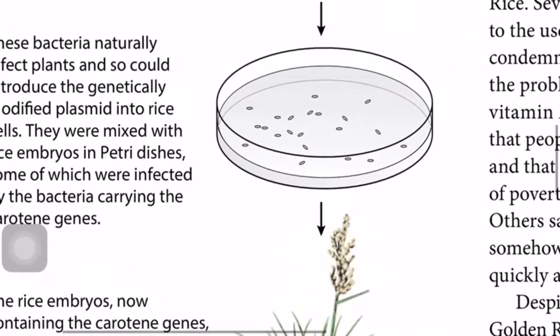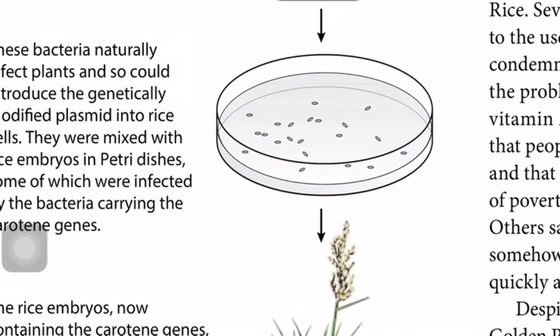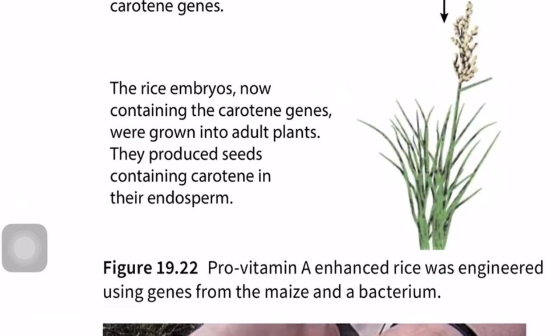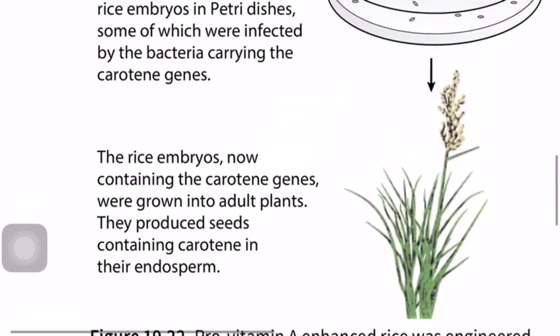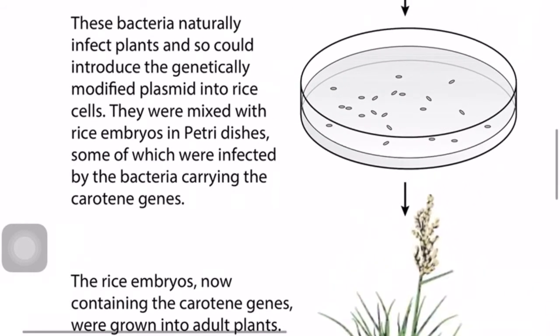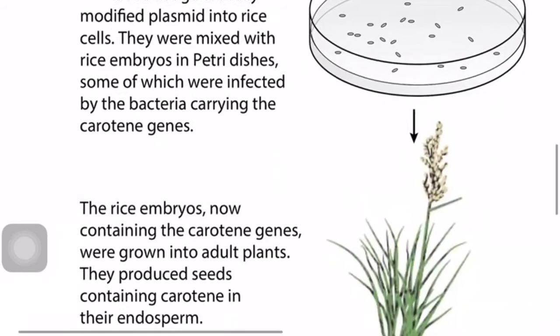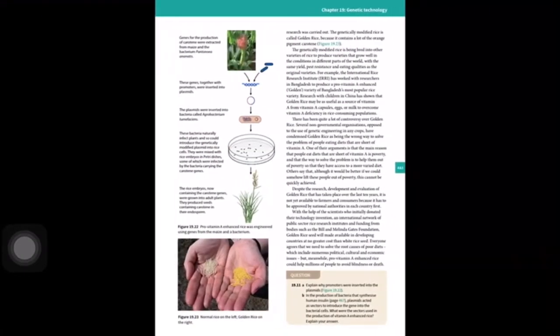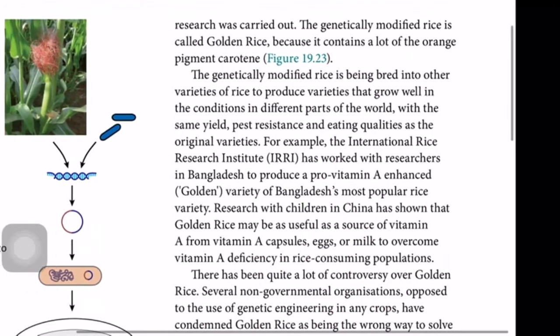When one seed containing the carotene gene is planted, it forms many seeds through mitosis, all genetically identical, so all seeds will produce carotene. The rice embryos containing the carotene genes are grown into adult plants that produce seeds containing carotene in their endosperm.